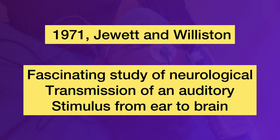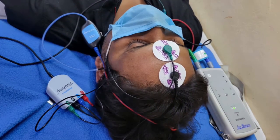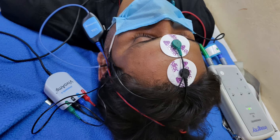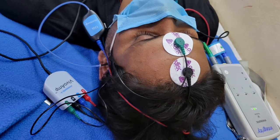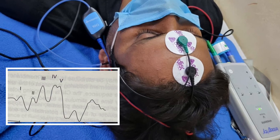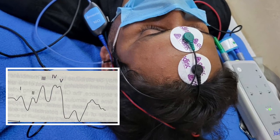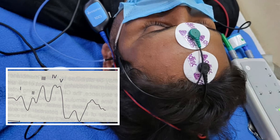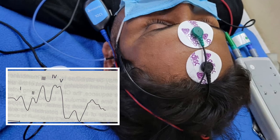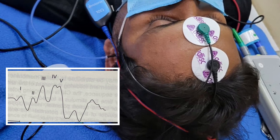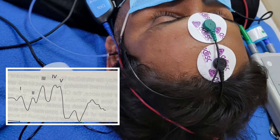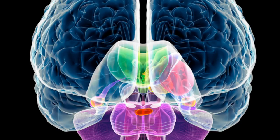When electrodes are placed over the scalp and an auditory stimulus is given, seven waveforms are recorded which happen sequentially in a certain time frame, and these seven waveforms represent auditory brainstem responses. These seven waves represent a particular area of the hindbrain.